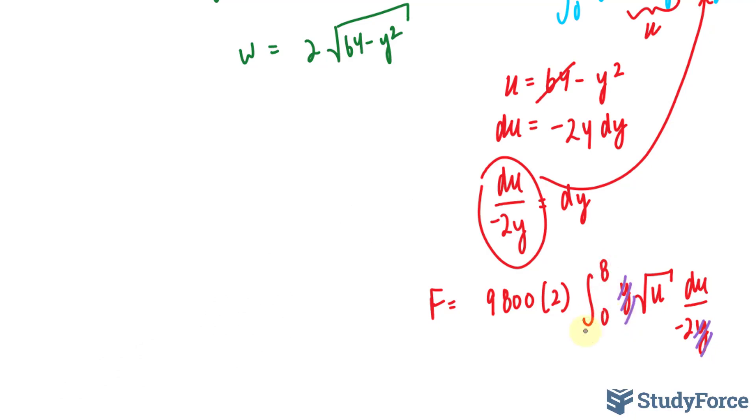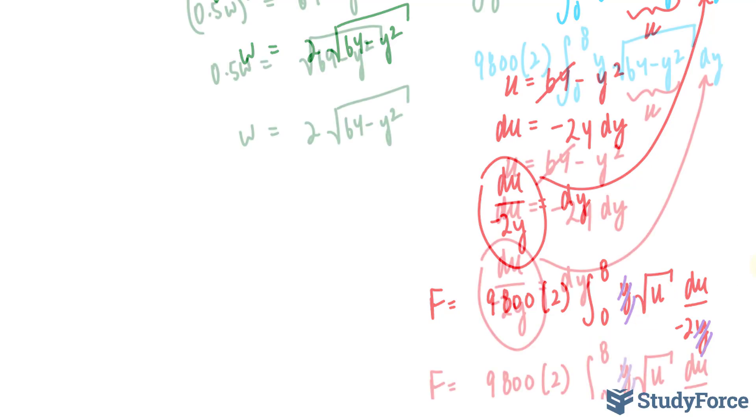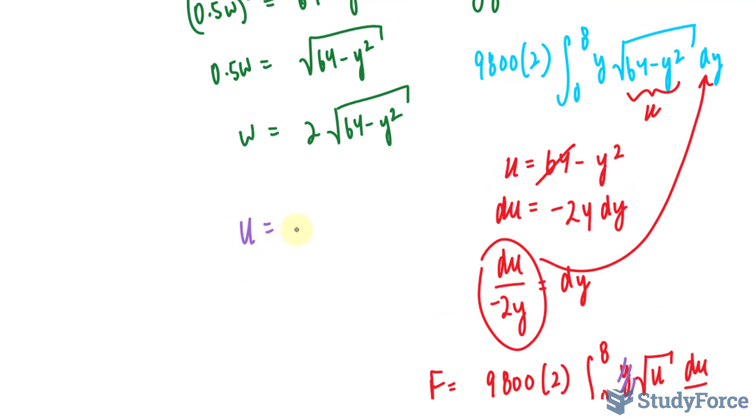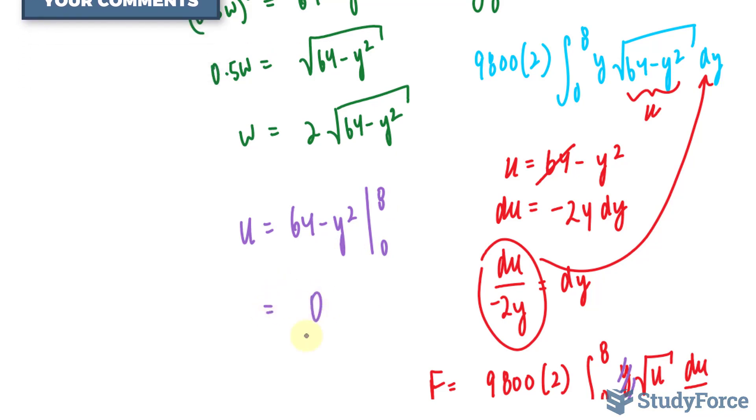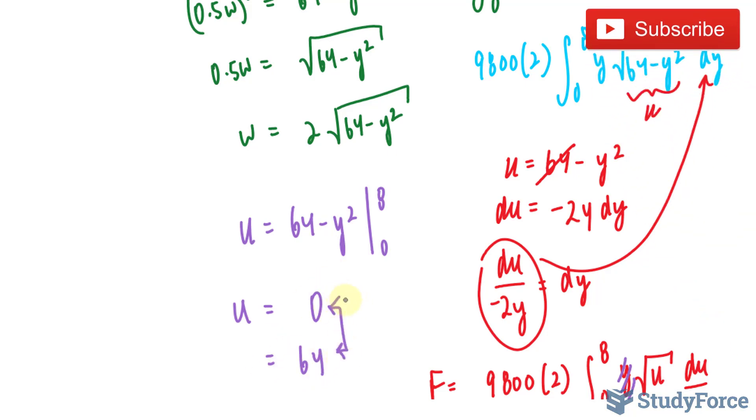Our bounds, however, are in terms of y, but this is in terms of u. So I have to find new bounds that are in terms of u. I'll have to take what my u is equal to, which was 64 minus y squared, substitute 8 and 0. If I substitute 8 into here, I end up with 0. So 8 has become 0. And if I substitute 0 into here, I get 64. So my new bounds are 0 and 64.